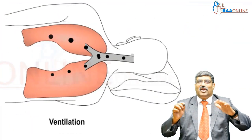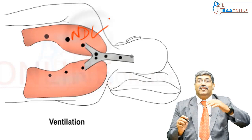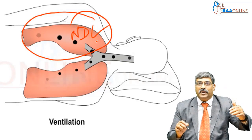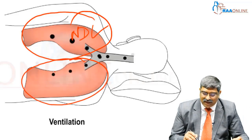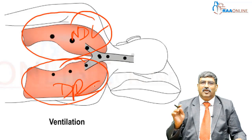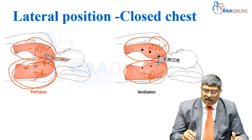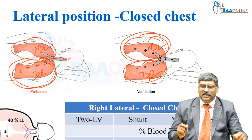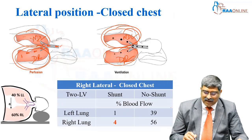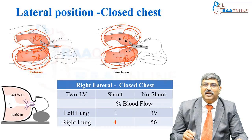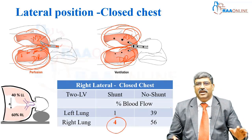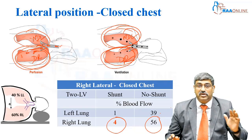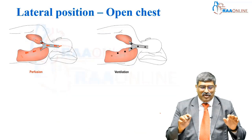Now looking at ventilation: the non-dependent lung, because air is lighter, will receive more ventilation — shown by a bigger circle. The dependent right lung will receive less ventilation. The bottom line is the dependent lung receives more perfusion and the non-dependent lung receives more ventilation, resulting in a gross ventilation-perfusion mismatch. In lateral closed chest, the right lung receiving more perfusion and less ventilation contributes to about four percent shunt.